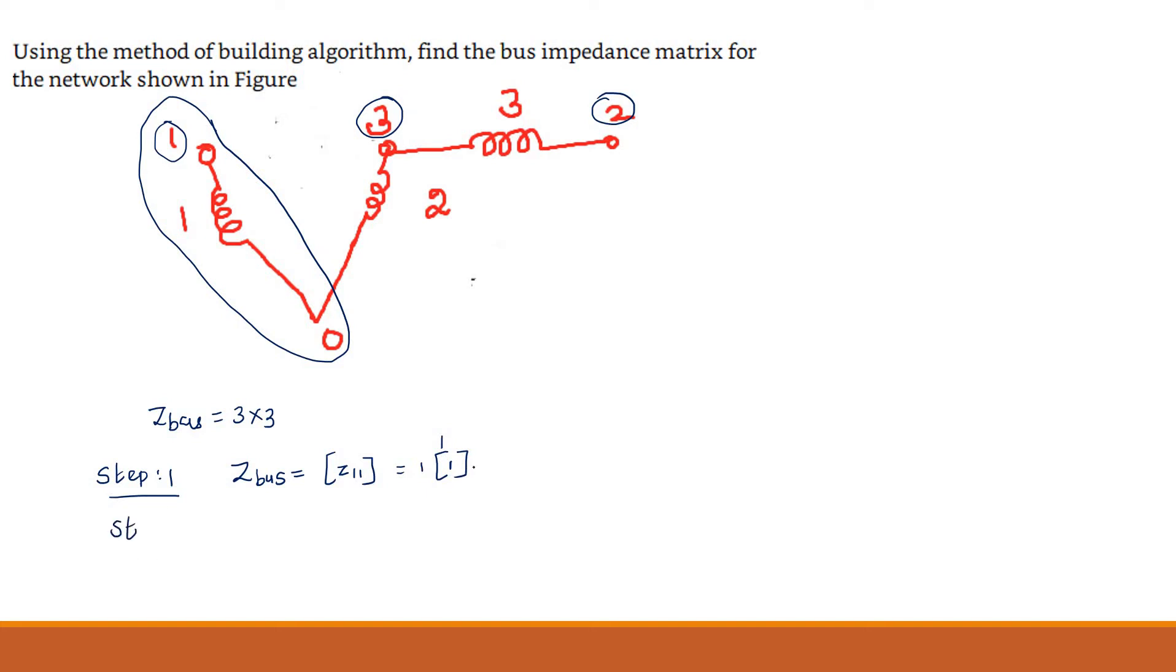Step number 2 uses type 1 modification. In step number 2, bus number 3 is connected to the reference bus. Here also it uses type 1 modification. How to write the Z bus matrix? That is: old [1, 1], and new [0, 0], and new element is 2, have to put 2. Here (3,3). So this is step number 2.